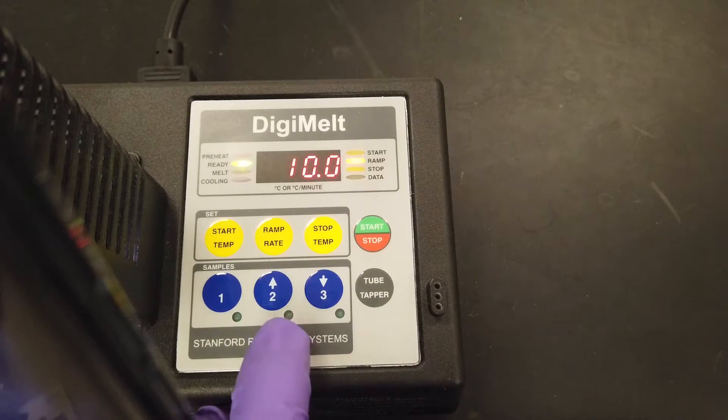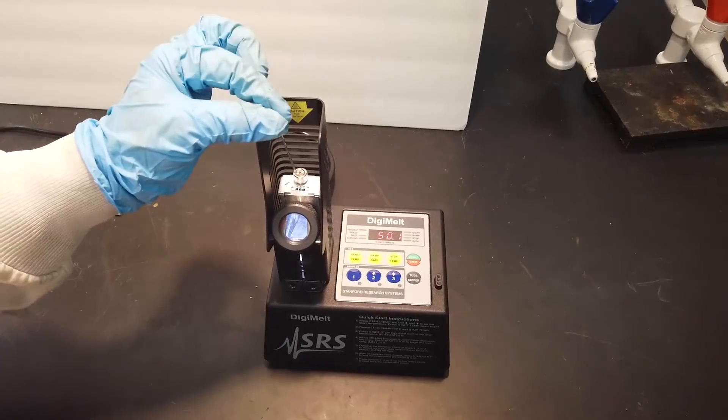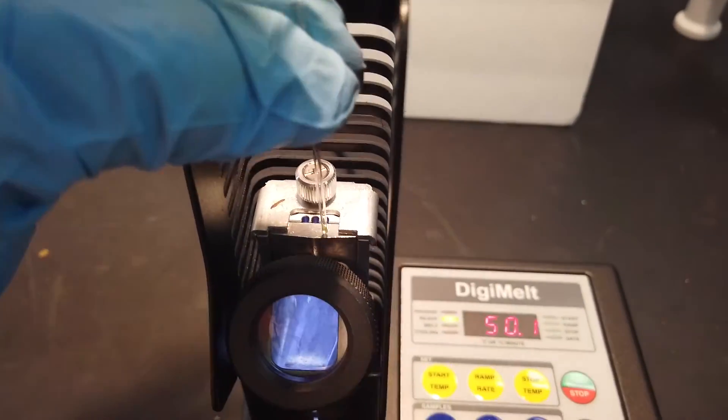Don't forget to switch the ramp rate to a lower rate, such as 2 degrees a minute, for the actual measurement. Insert your capillary tube into the top of the apparatus. Note that you can run up to three samples at a time.